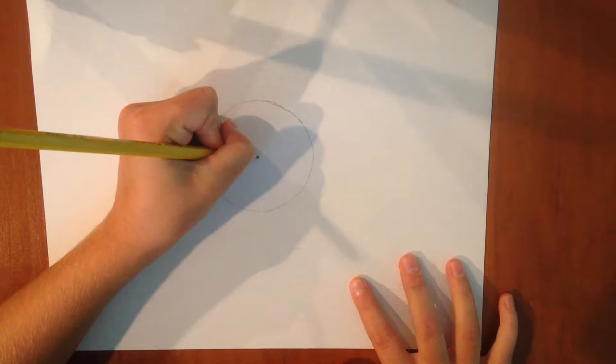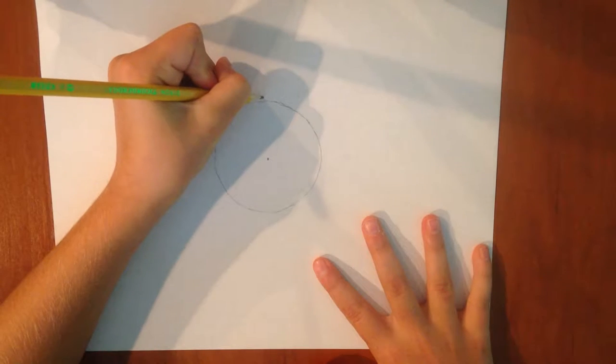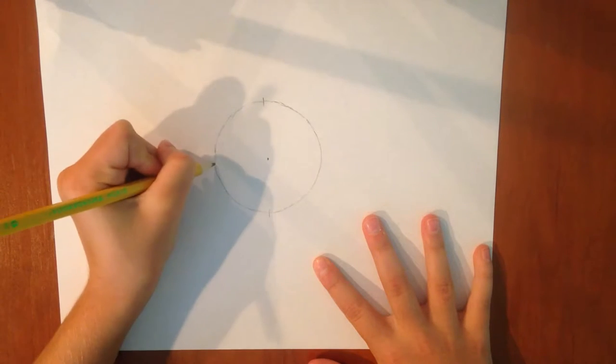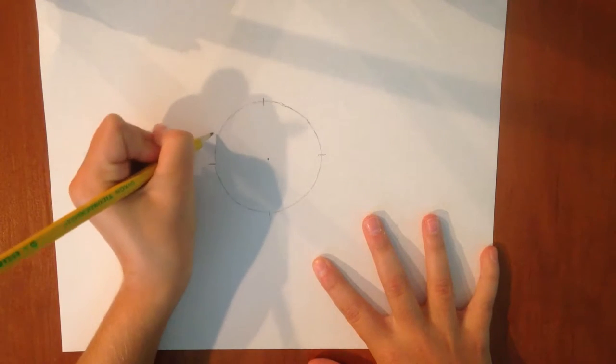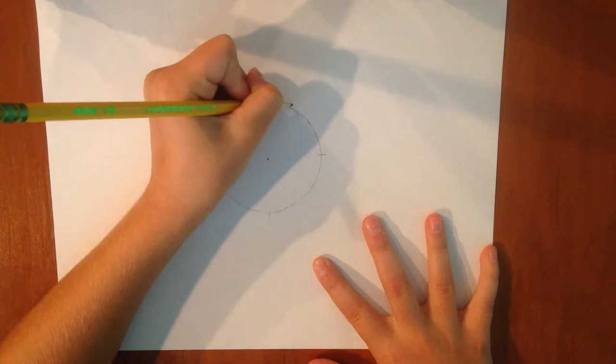Now put a point in this as perfectly in the center as you can. Now you're going to make a point at, so halfway, right here, and then you're going to do two in between.